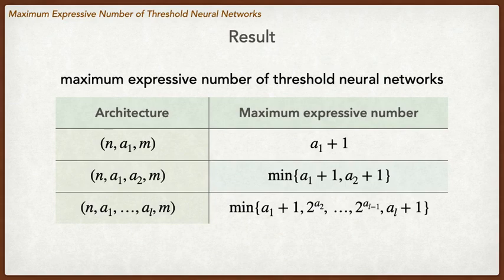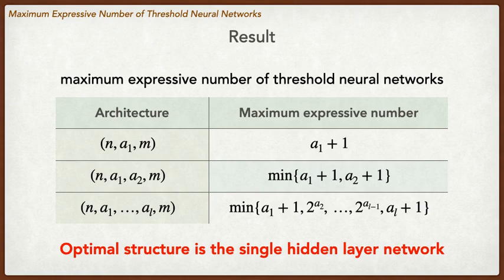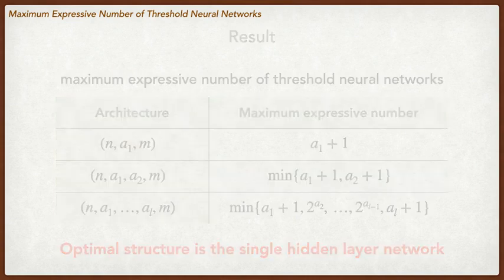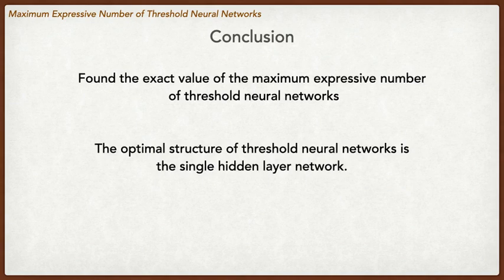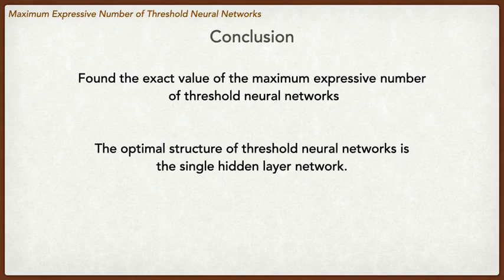Our results show the exact value of the maximum expressive number of threshold neural networks. From this table, we can see that the deeper network has rather smaller expressive numbers than the shallower one. So the optimal structure of threshold neural networks is the single hidden layer network. In conclusion, we found that a deeper network doesn't always have higher expressive power. That's all. Thank you.